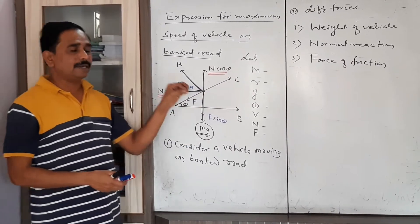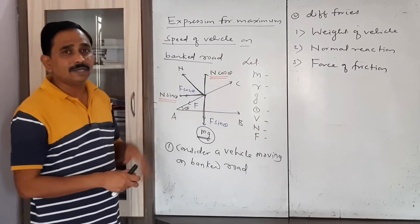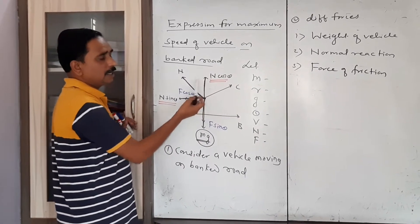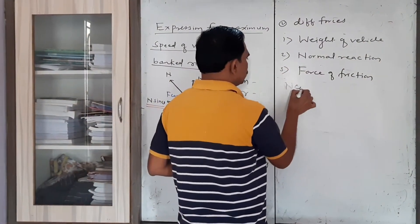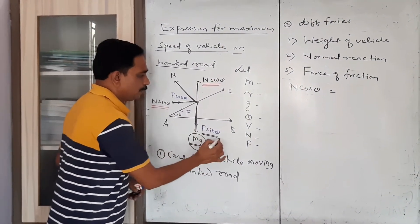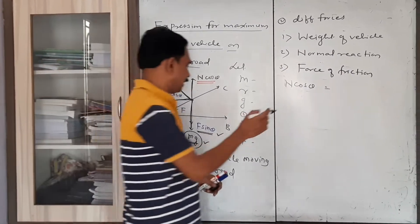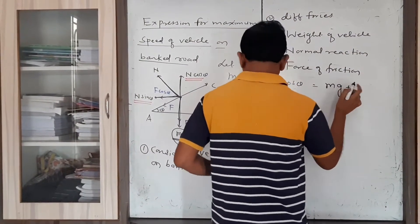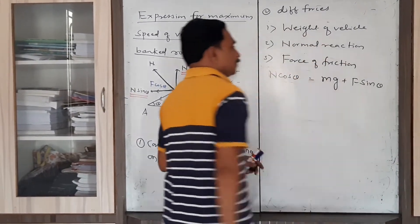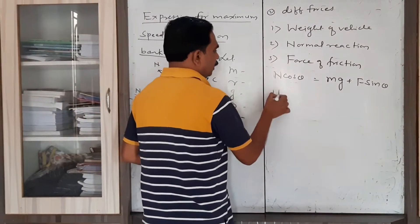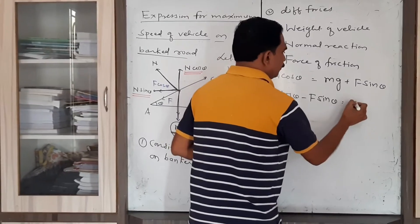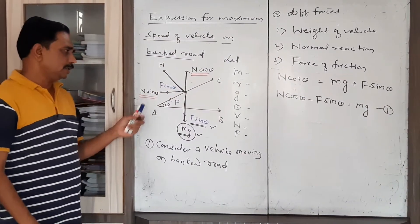From the figure we write two important equations on the basis of which we derive this expression. Consider the components acting in the vertically upward direction — that is N cos theta — and those acting in the downward direction — that is F sin theta and weight. So the first equation is: N cos theta minus F sin theta equals mg.